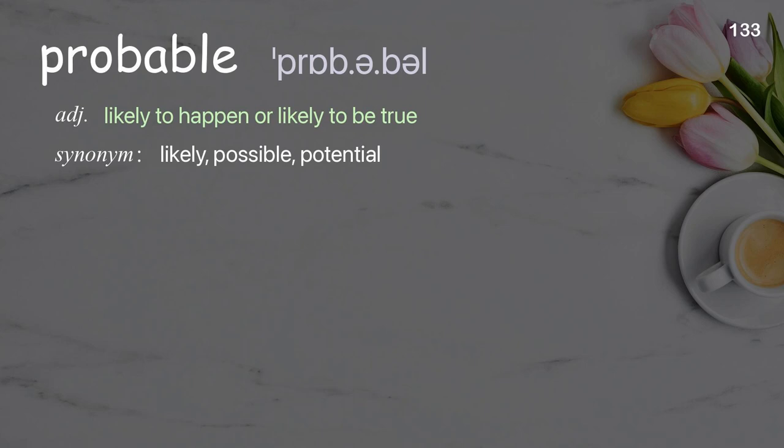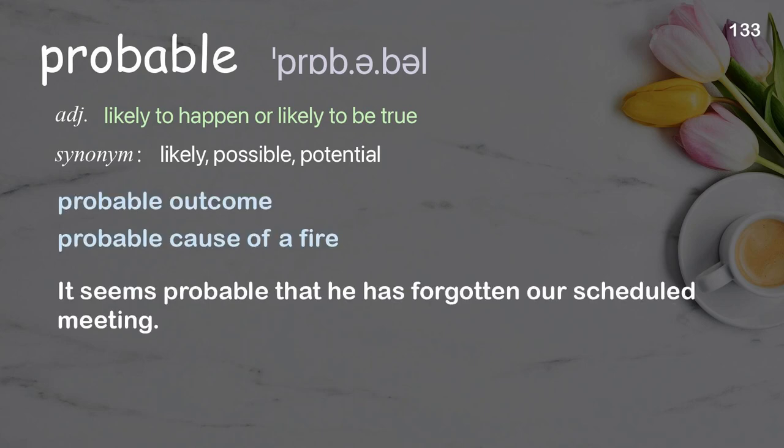Probable: likely to happen or likely to be true. Examples: probable outcome, probable cause of a fire. It seems probable that he has forgotten our scheduled meeting.